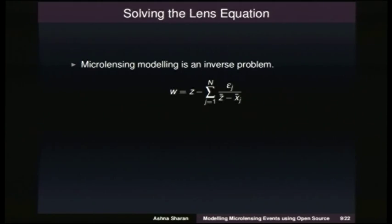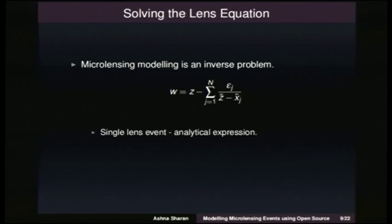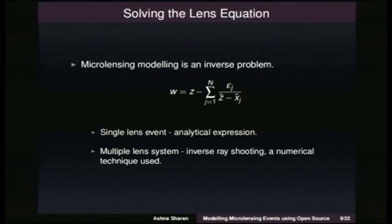Microlensing modeling is an inverse problem because we know the position of the source and we need to find the position of the images, so we need to invert the lens equation. For a single-lens event we are able to get an analytical expression — inverting gives us a quadratic equation. For a multiple-lens system it gets harder: an N-squared-plus-one degree polynomial, where N is the number of lenses. So we use a numerical technique called inverse-ray shooting.